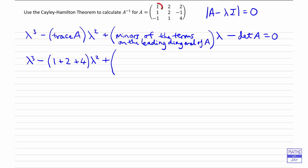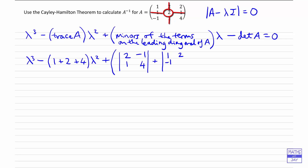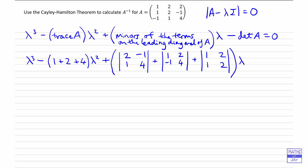For the minors of the terms on the leading diagonal: the first element is 1, so the related 2×2 matrix is [2, -1; 1, 4]. The next diagonal element is 2, giving the 2×2 matrix [1, 2; -1, 4]. And the last one, looking at the 4, we're left with [1, 2; 1, 2]. That whole sum multiplies lambda.